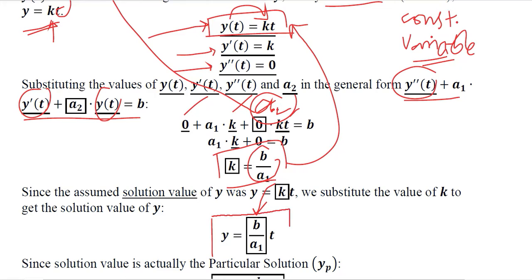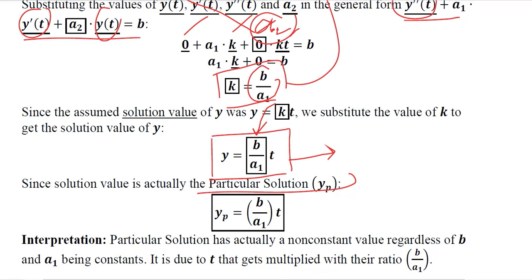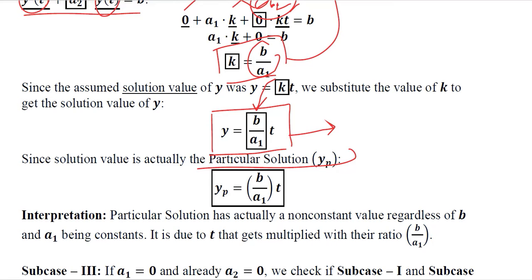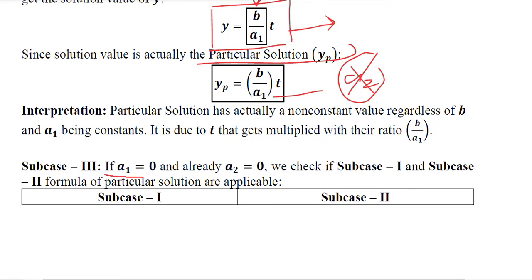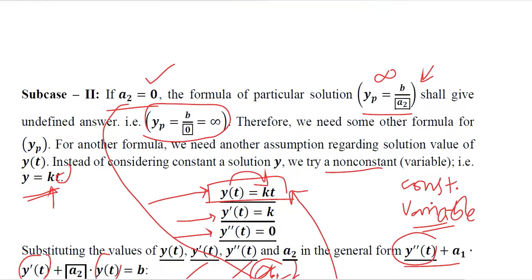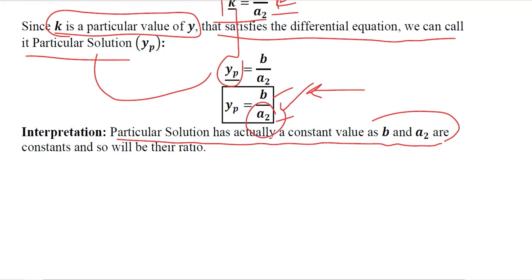This value of Y can be considered the particular solution based on our assumption and simplification — this is subcase 2. Notice that A2 is absent from the denominator, which guarantees there will be no undefined answer. Now, subcase 3 applies when both A1 and A2 are considered to be 0. With A1 now in the denominator of subcase 2's formula, neither the subcase 1 nor the subcase 2 formula can be used.